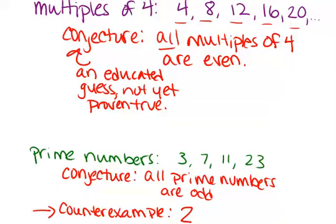So the main things you need to remember here are a conjecture is just an educated guess that you haven't yet proven is true for sure, and a counterexample is one example that shows that your conjecture is wrong.